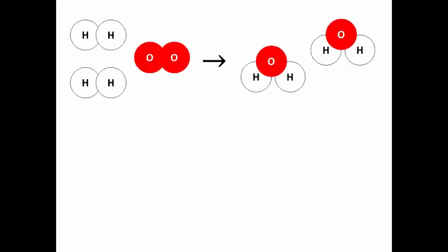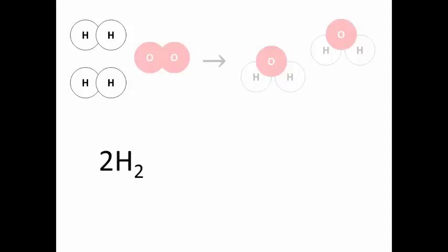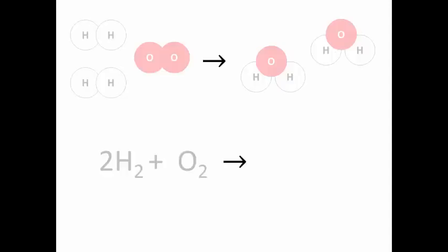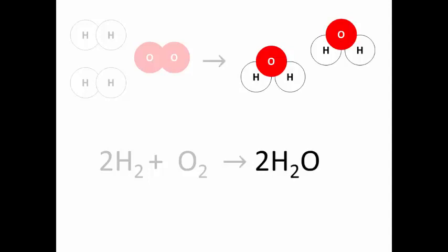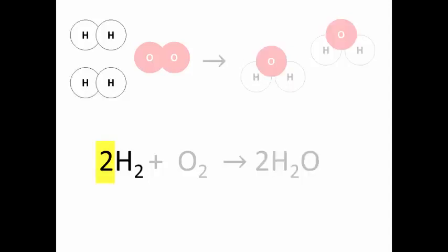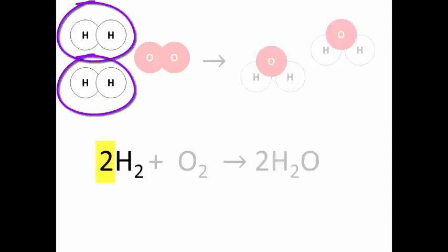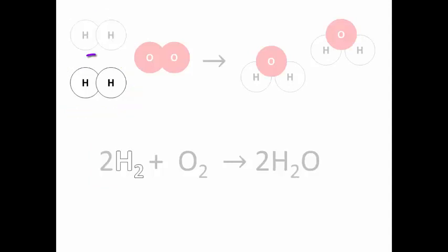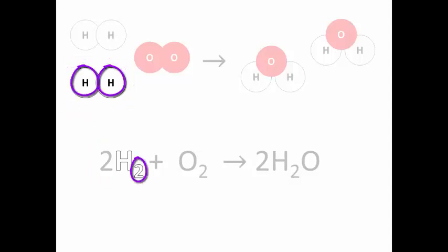What's the equation for this picture? Here we have 2H2 plus O2 gives 2H2O. This big 2 tells us that there are two molecules, and then we have H2 telling us what each molecule is like. So in each of these two molecules, there are H atoms, two of them bonded together.